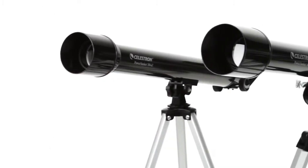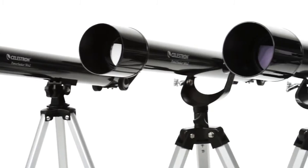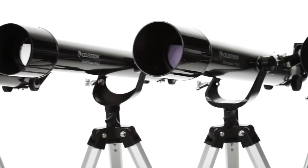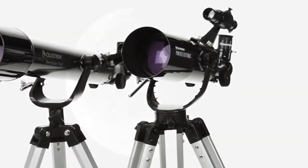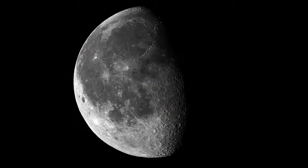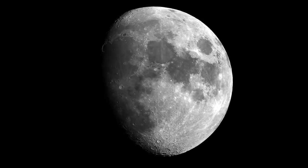Choose the optical tube that's right for you. From the compact PowerSeeker 50AZ with grab-and-go convenience to the large PowerSeeker 80AZ-S with more light-gathering ability, every PowerSeeker offers great views of the moon and planets.